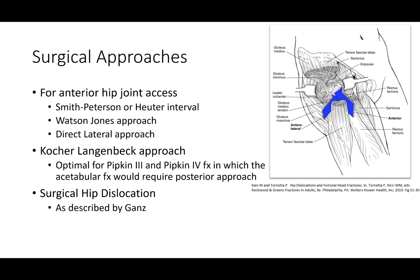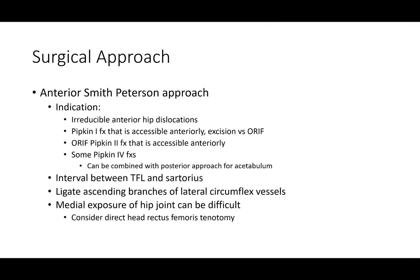Surgical approaches for anterior hip access include Smith-Peterson, Watson-Jones, and sometimes direct lateral. Kocher-Langenbeck and posterior approaches are good for Pipkin 3s and 4s. Surgical hip dislocation is another option described by Ganz. Smith-Peterson is good for Pipkin 1 fragments that tend to be somewhat anterior — for excision or possible fixation — as well as some Pipkin 2s and occasionally Pipkin 4 in combo approaches. The interval is between the tensor fascia lata and the sartorius, and it can be tough getting to all of the medial hip joint without a direct head of rectus femoris tenotomy.